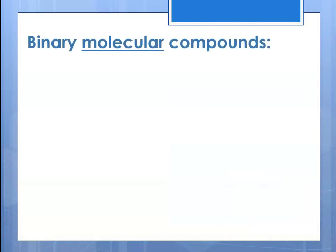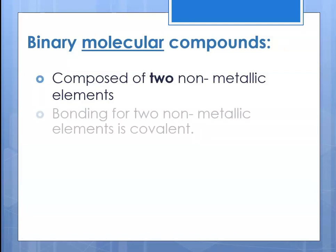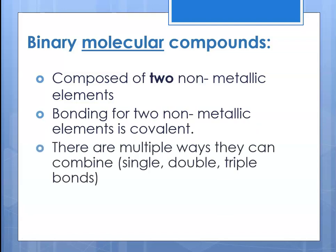We begin with binary molecular compounds. Binary molecular compounds are composed of two non-metallic elements. Since it's non-metal to non-metal, this bonding is covalent. There are multiple ways that non-metals can combine with covalent bonds — specifically there might be single bonds, double bonds, triple bonds, or some combination.